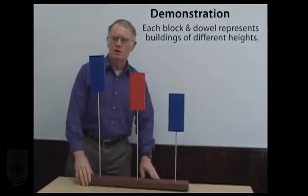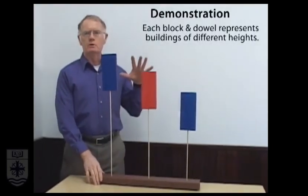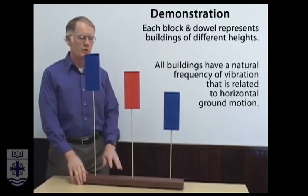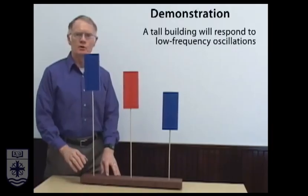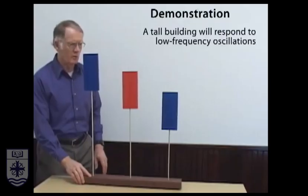The idea of the BOSS model is that different height buildings will respond to different frequencies of horizontal ground motion. A tall building will respond to very slow or low frequency oscillations of the ground.